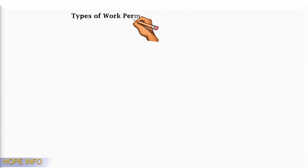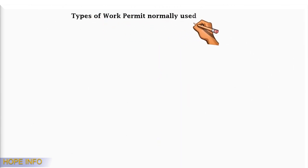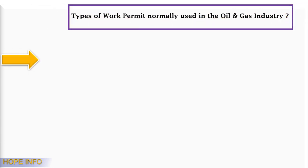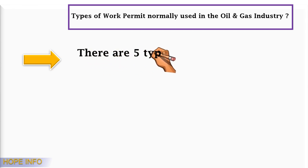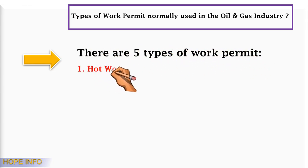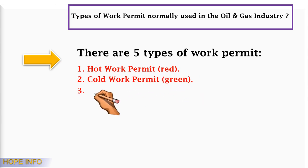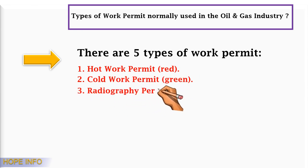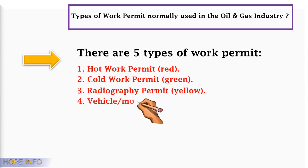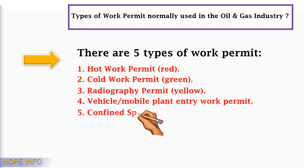What are the types of work permits normally used in oil and gas industries? There are five types of work permits: hot work permit (color is red), cold work permit (color is green), radiographic work permit (color is yellow), vehicle or mobile plant entry work permit, and confined space entry permit.